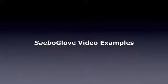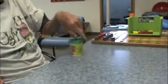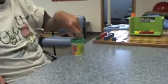Here are some video examples of clients using their affected hand with and without the SABO Glove. In this first example, the client is unable to grasp the container due to limited wrist and thumb extension.